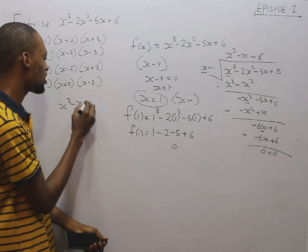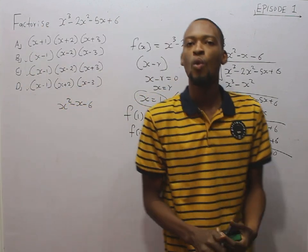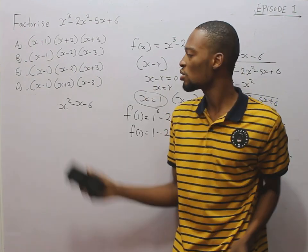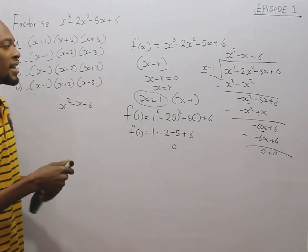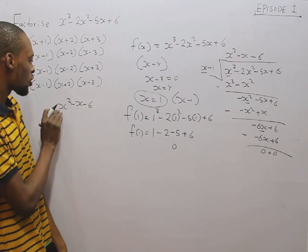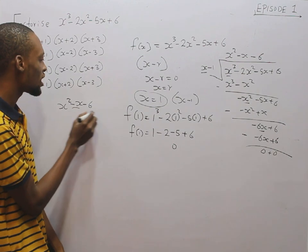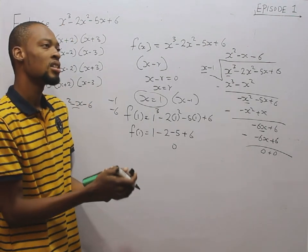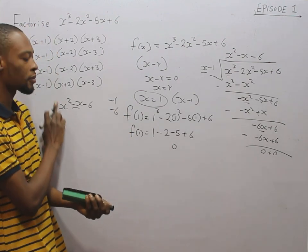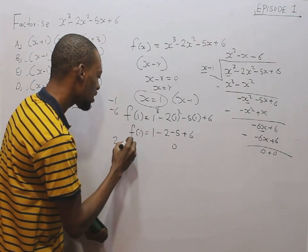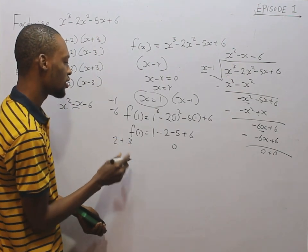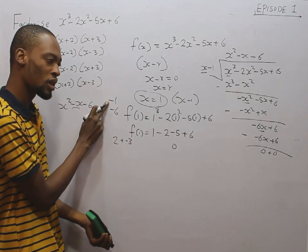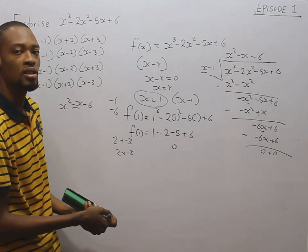s squared minus s minus 6 is a quadratic expression. When you factorize it, you get two roots — two roots plus the one root we already found gives three roots total. For the quadratic s squared minus s minus 6: the middle term is minus 1s and the constant is minus 6. You look for two values that when added give minus 1 and when multiplied give minus 6. Looking at 2 and 3: 2 plus minus 3 equals minus 1, and 2 times minus 3 equals minus 6. So that qualifies.